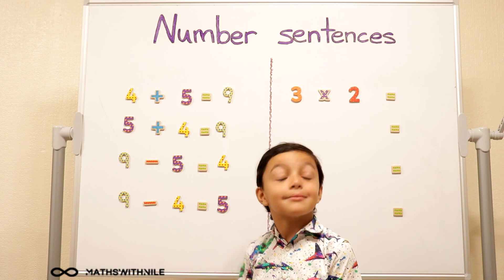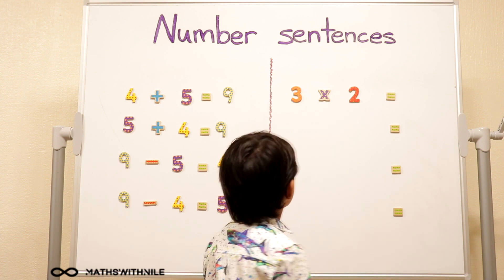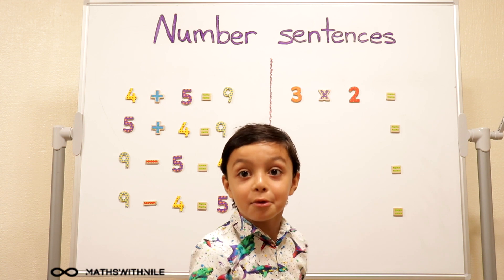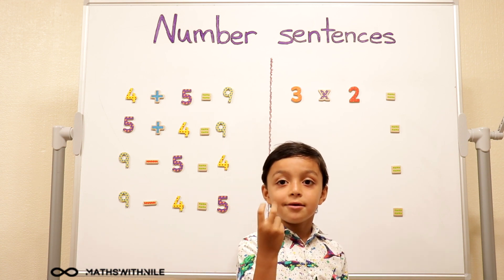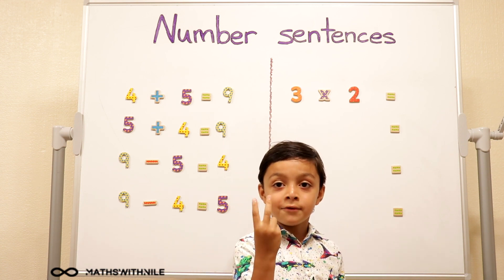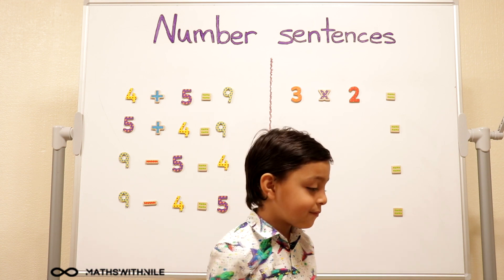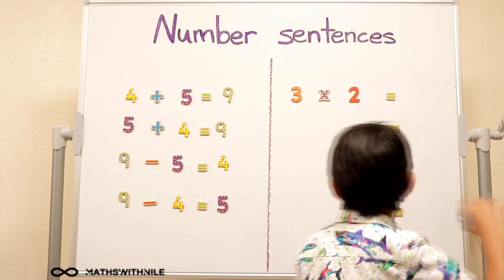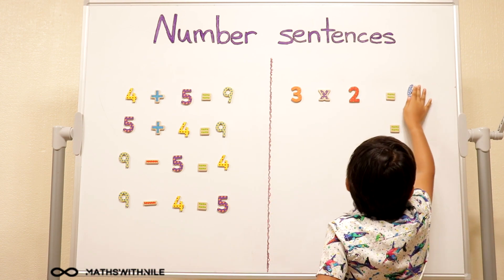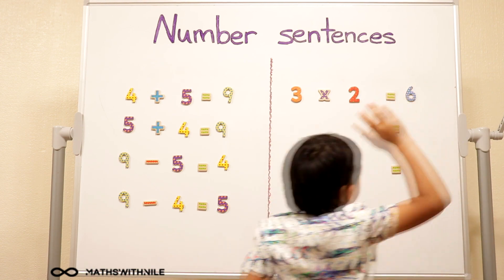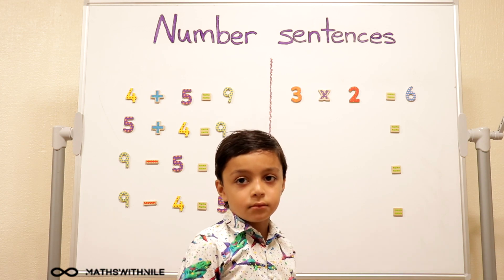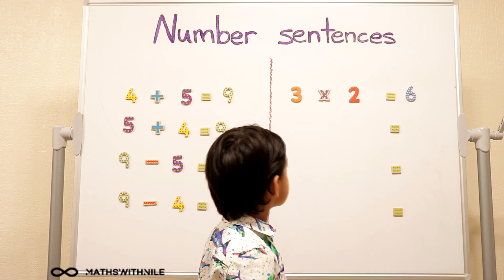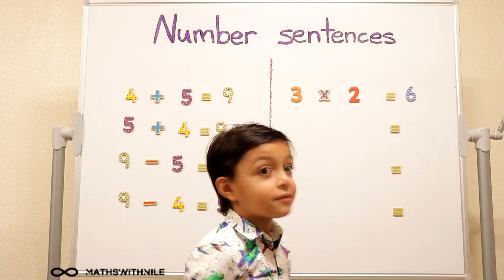Let's look at the other question. Three times two. Three times two. Two, four, six. Very good. Six.